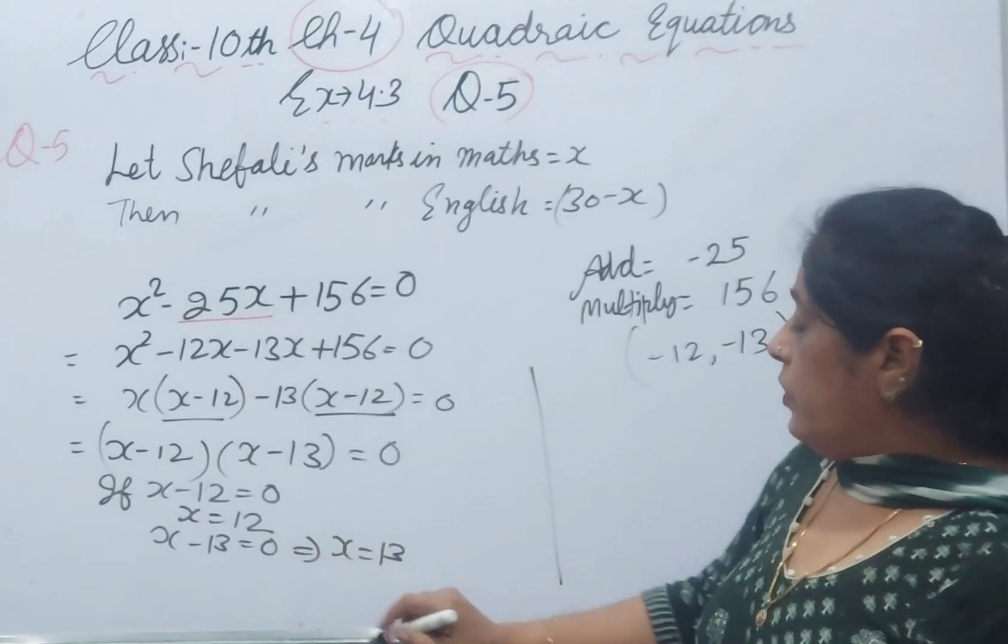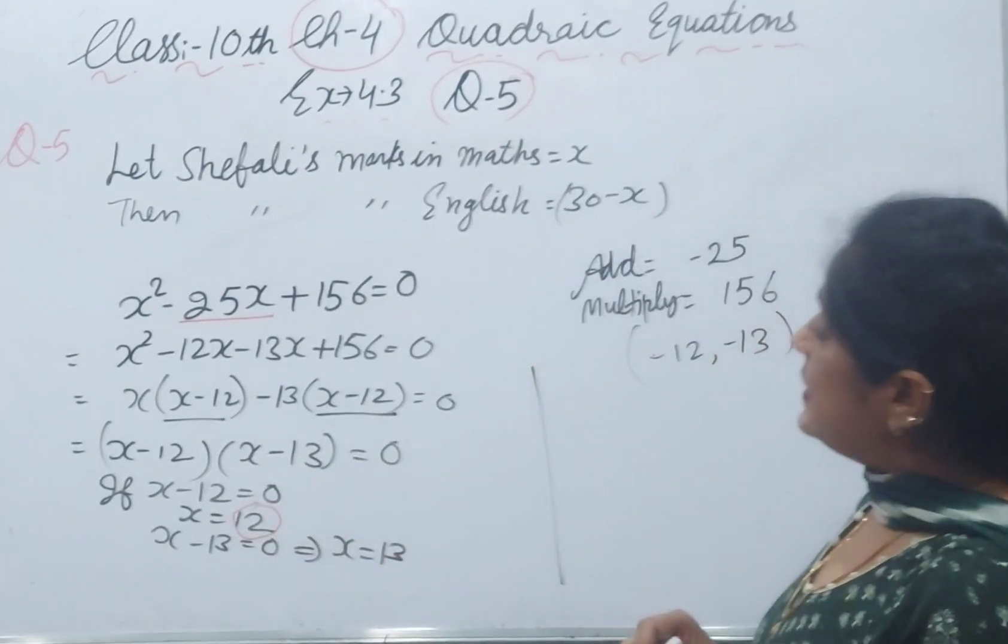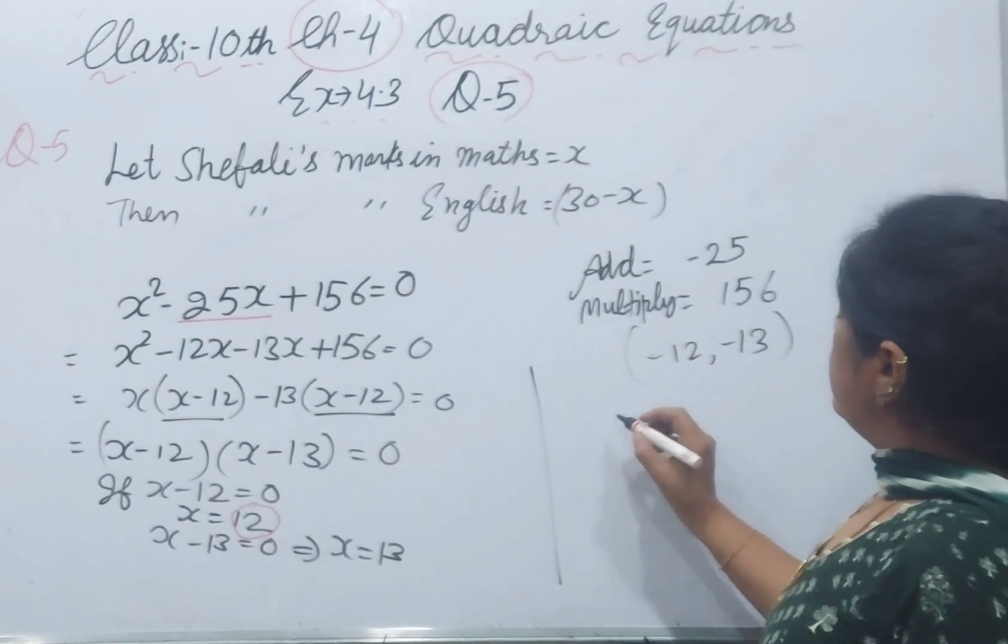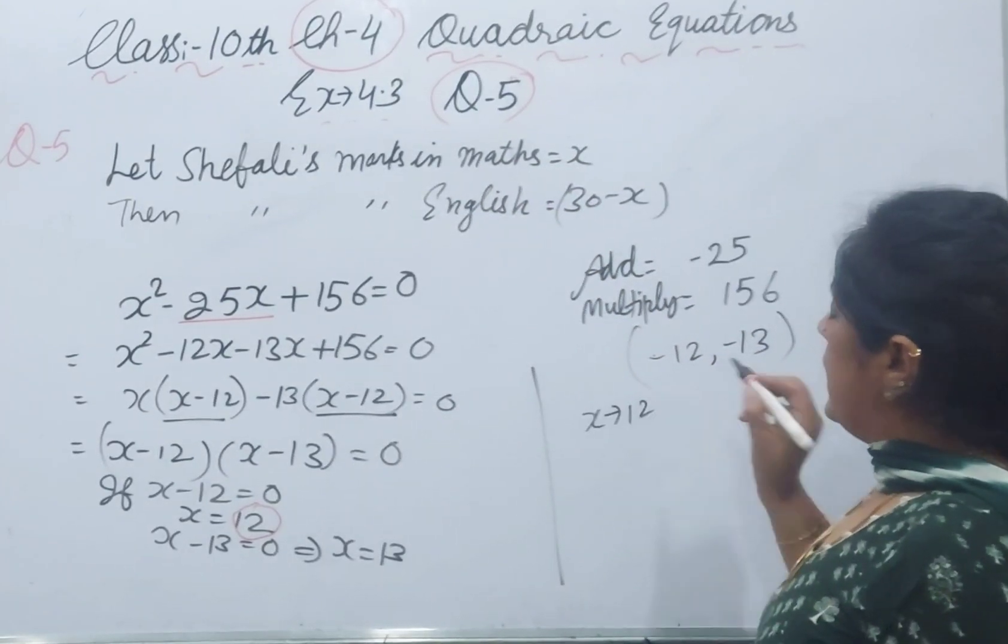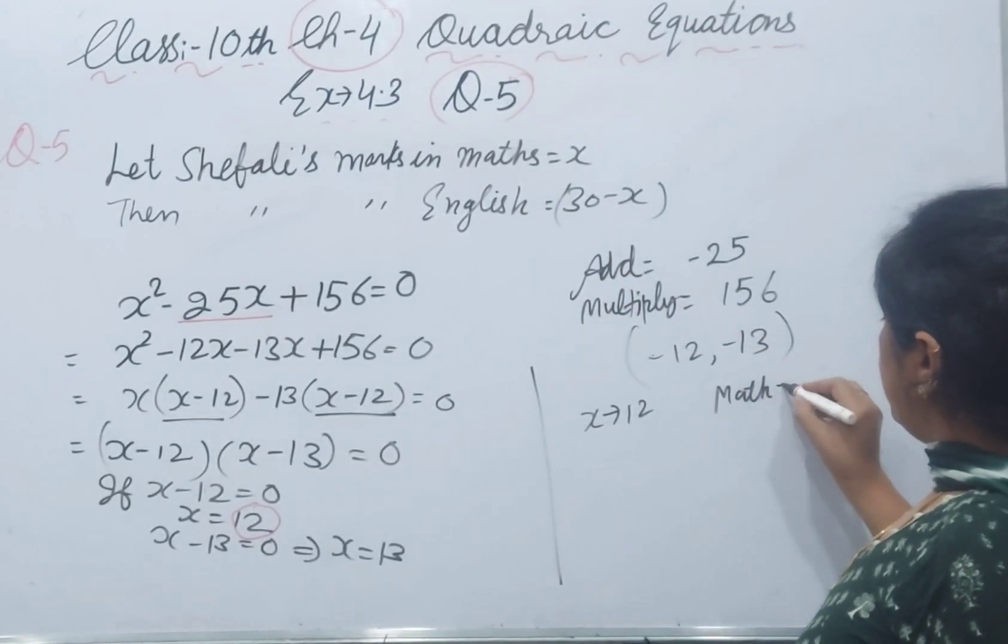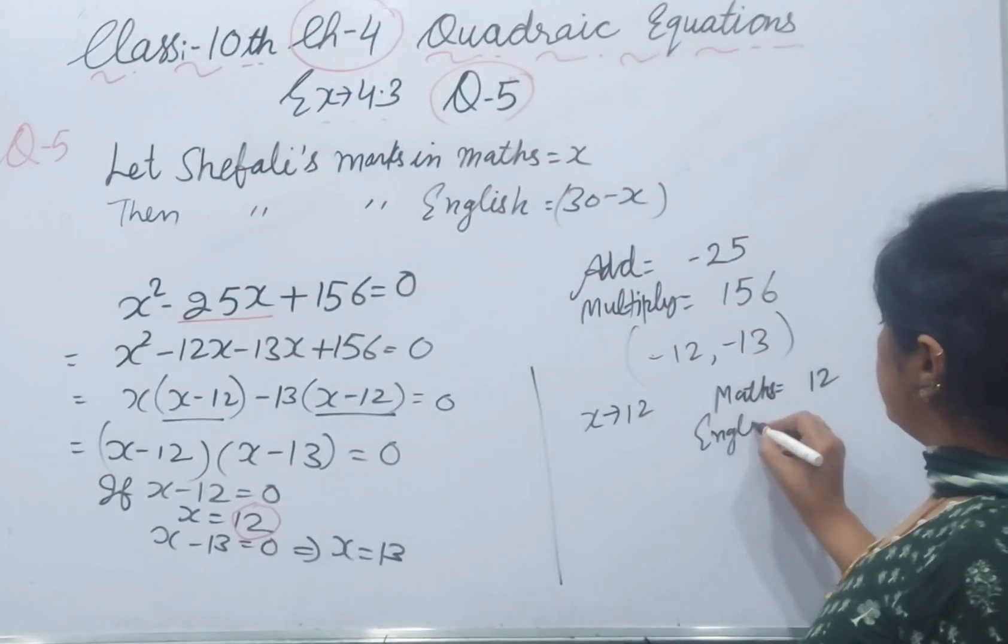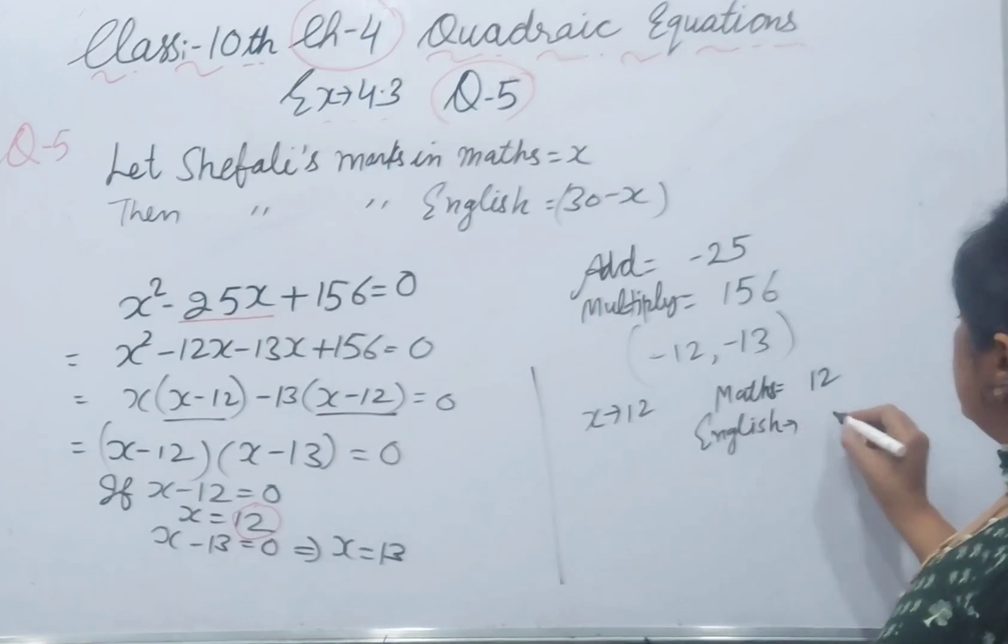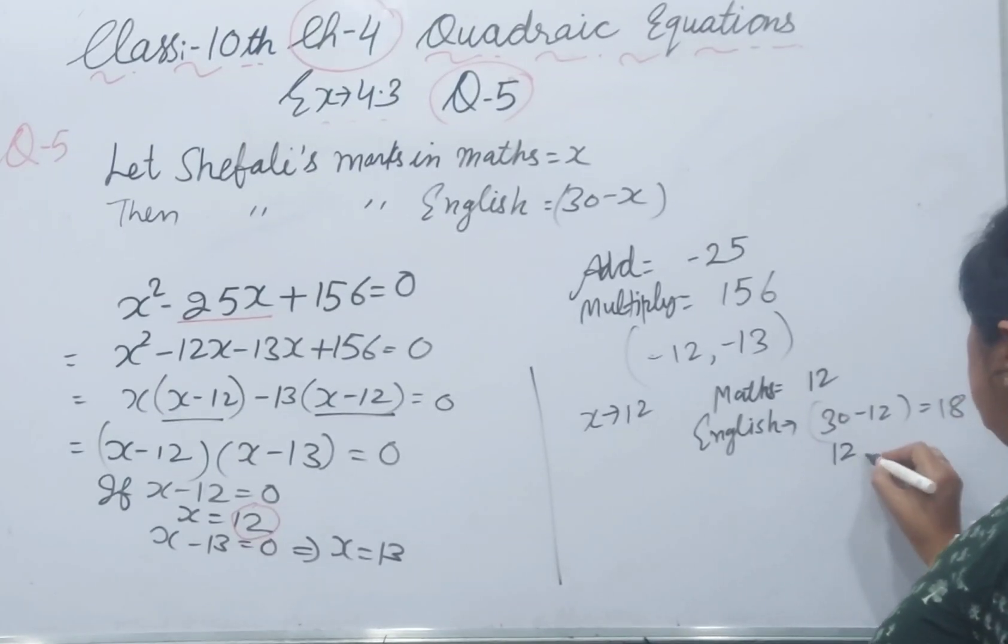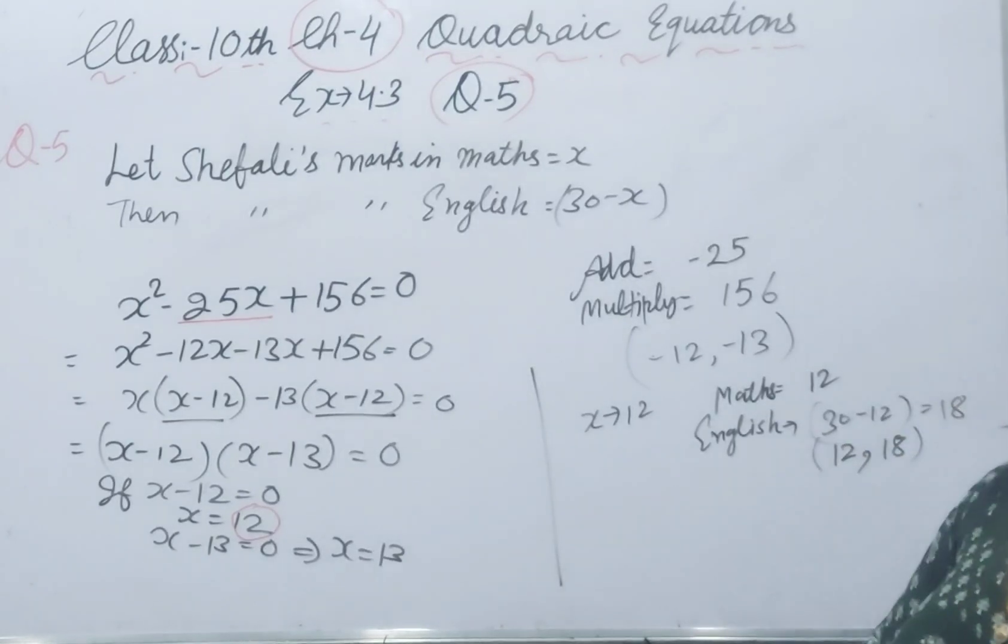Now, if we take x equals 12, what is our x? x is Shefali's marks in mathematics. If we are taking x equals 12, then math marks are 12 and English marks are 30 minus 12, which equals 18. Shefali got 12 marks in math and 18 marks in English.